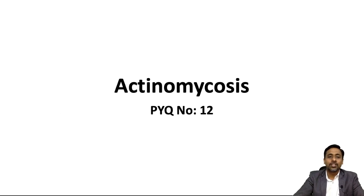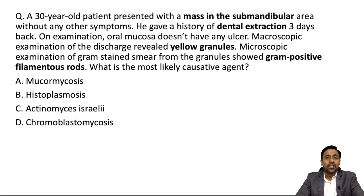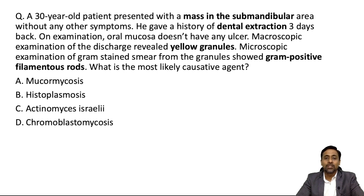The MCQ presents a 30-year-old patient who presented with a mass in the submandibular area without any other symptom, with a history of dental extraction three days back. On examination, oral mucosa does not have any ulcer. Macroscopic examination of the discharge revealed yellow granules, and microscopic examination of gram-stained smear from the granules showed gram positive filamentous rods.